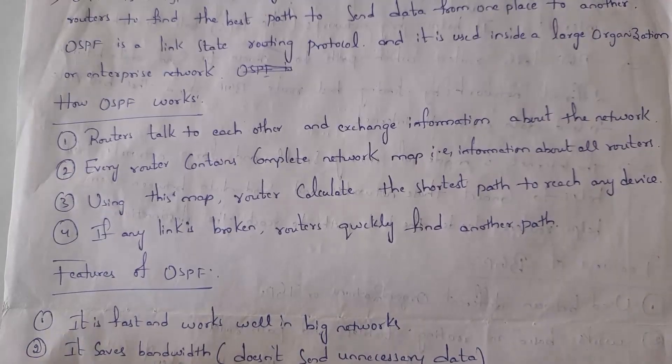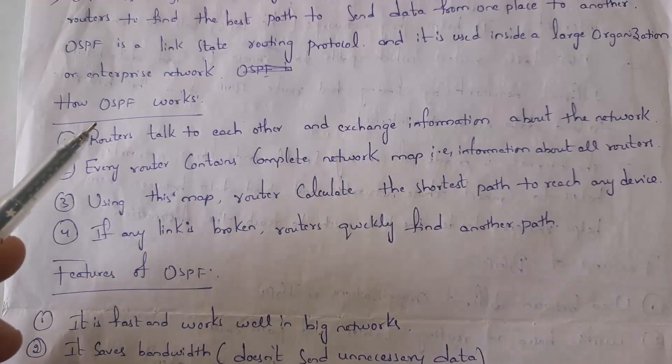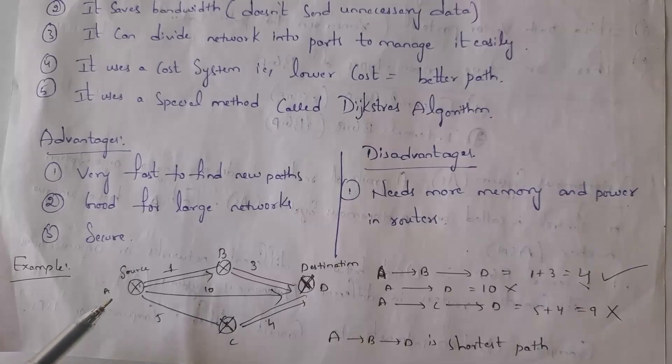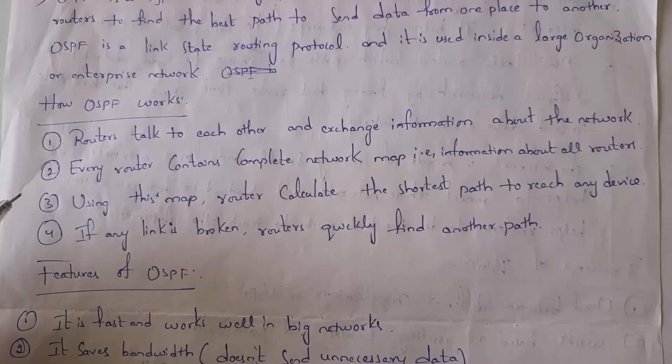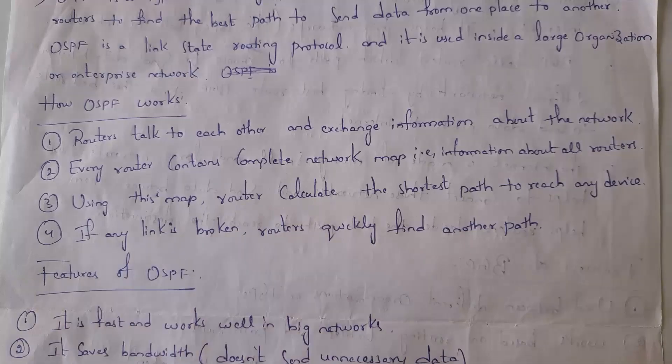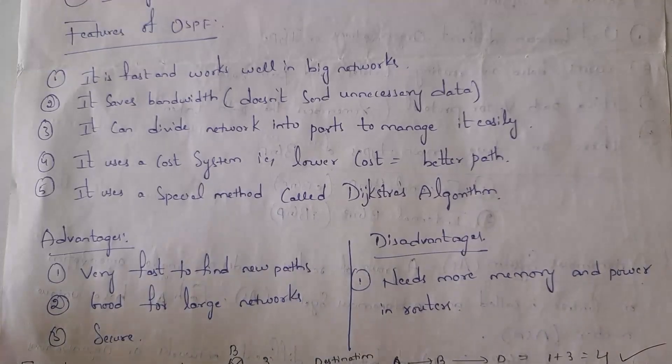This is how OSPF works. First, routers talk to each other and exchange information about the network. Each router contains information about all other routers in the network. That is, each router knows the entire roadmap. By using this map, each router will calculate the shortest distance in order to reach another device. In case of any cable break, the router simply switches to another route. These are features of OSPF.